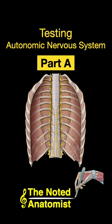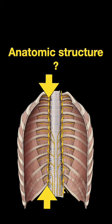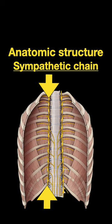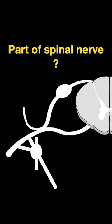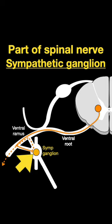Testing Autonomic Nervous System Part A. What anatomic structure is that? That is a sympathetic chain. What part of the spinal nerve is that? Well, that is a sympathetic ganglion, which is one ganglion in the chain.